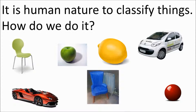Our hunter-gatherer ancestors might have classified berries into ones that are tasty and you can eat, and ones that will kill you. That information would have been known to everybody and it would have been taught and passed down the generations.